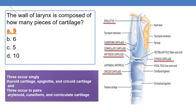The wall of the larynx is composed of how many pieces of cartilage? There are 9 pieces of cartilage. Three cartilages occur singly: thyroid cartilage, epiglottis, and cricoid cartilage. There is only one epiglottis, one thyroid cartilage, and one cricoid cartilage.